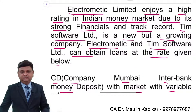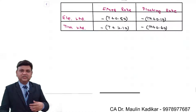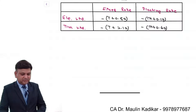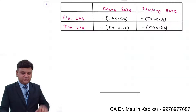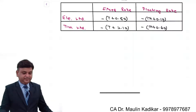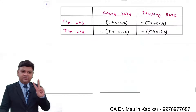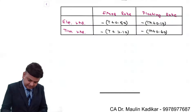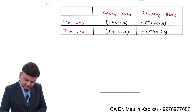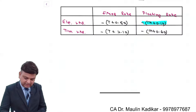Try to do the answer on your own. The question provides information that Electrometric Limited enjoys a high credit rating in the Indian money market due to its strong financials and track record. Team Software is a new but growing company. Electrometric wants to take a loan at the variable rate — MIBOR plus 0.1% — while Team Software wants to take a loan at the fixed rate.